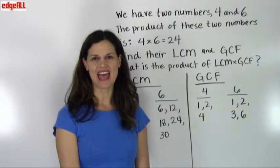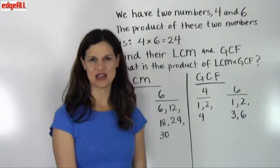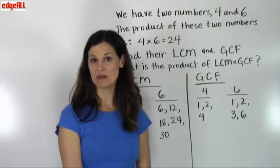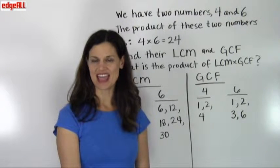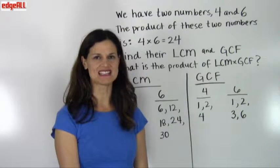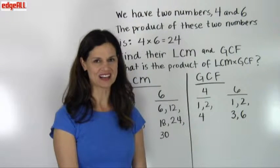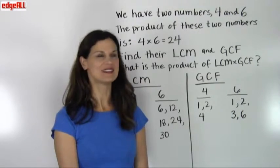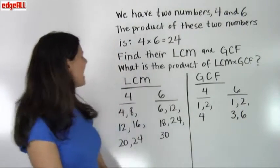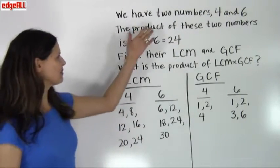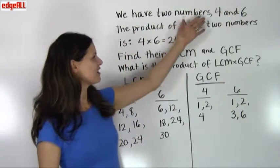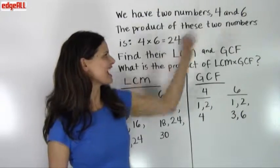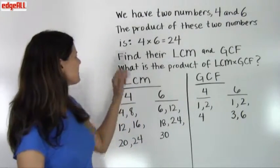Let's take a look at the relationship between the least common multiple and the greatest common factor of two numbers. If we have two numbers, and in our example we're going to use the numbers 4 and 6.